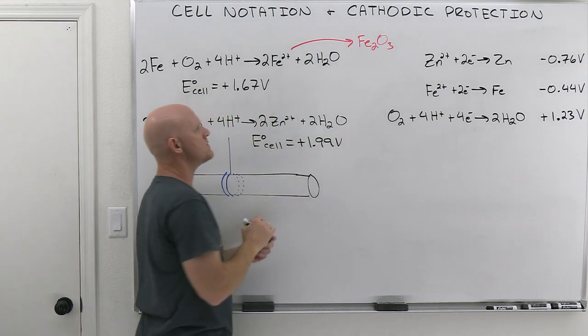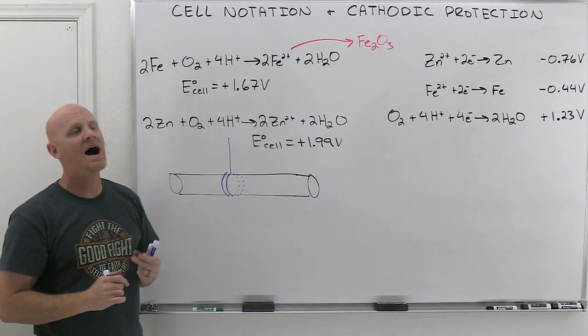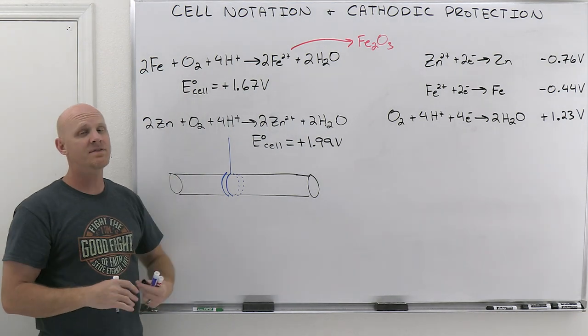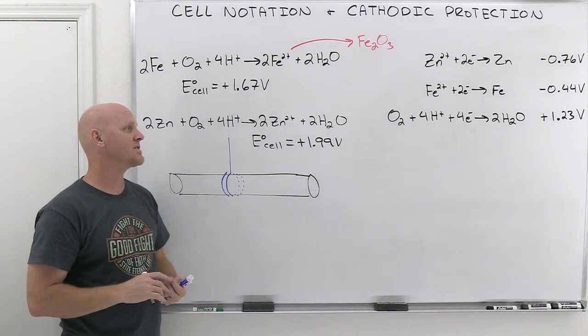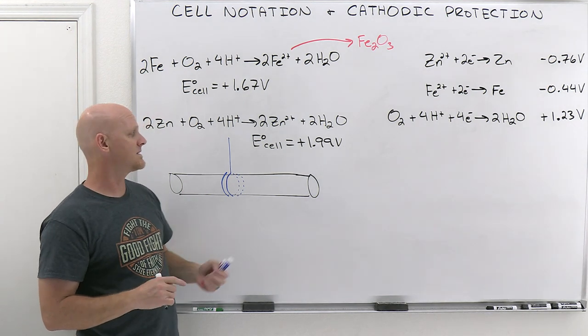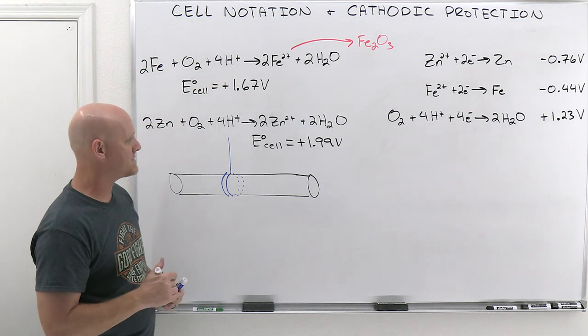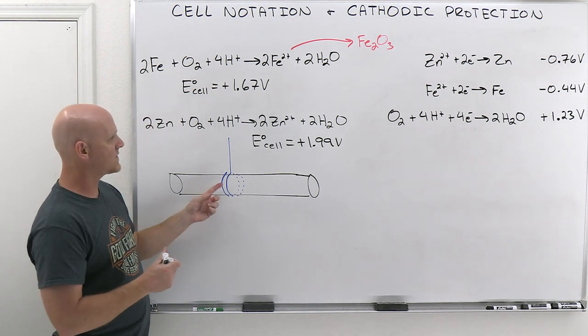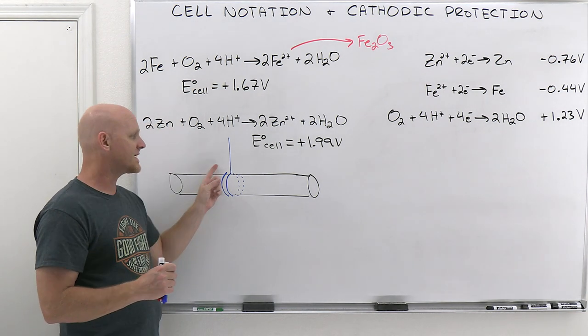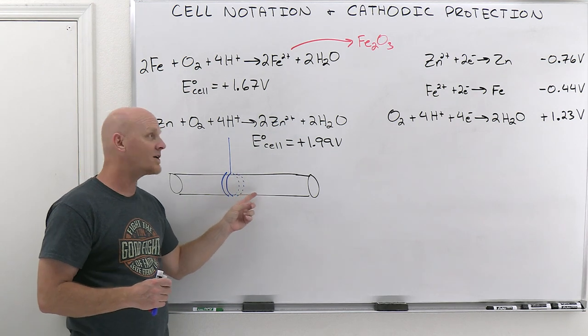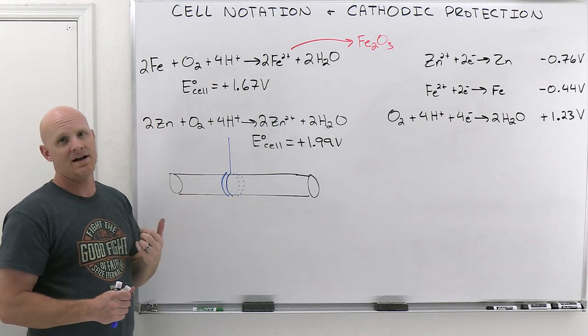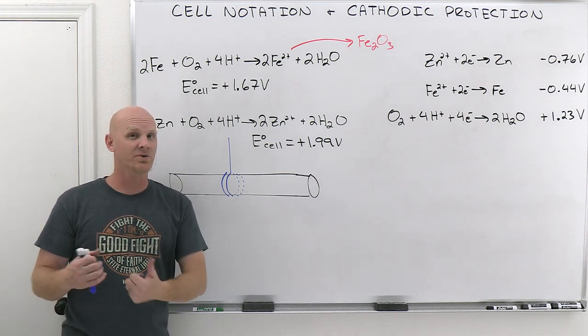And so this reaction's even more favorable than the one where iron gets oxidized. So by putting something that's more easily oxidized than the iron in connection with it, so you've got something that's going to get oxidized instead, and what ultimately happens here is that the zinc is actually going to lose electrons, and those electrons are going to get transferred through the iron to the oxygen. And so the iron is actually going to act as some sort of inert electrode.